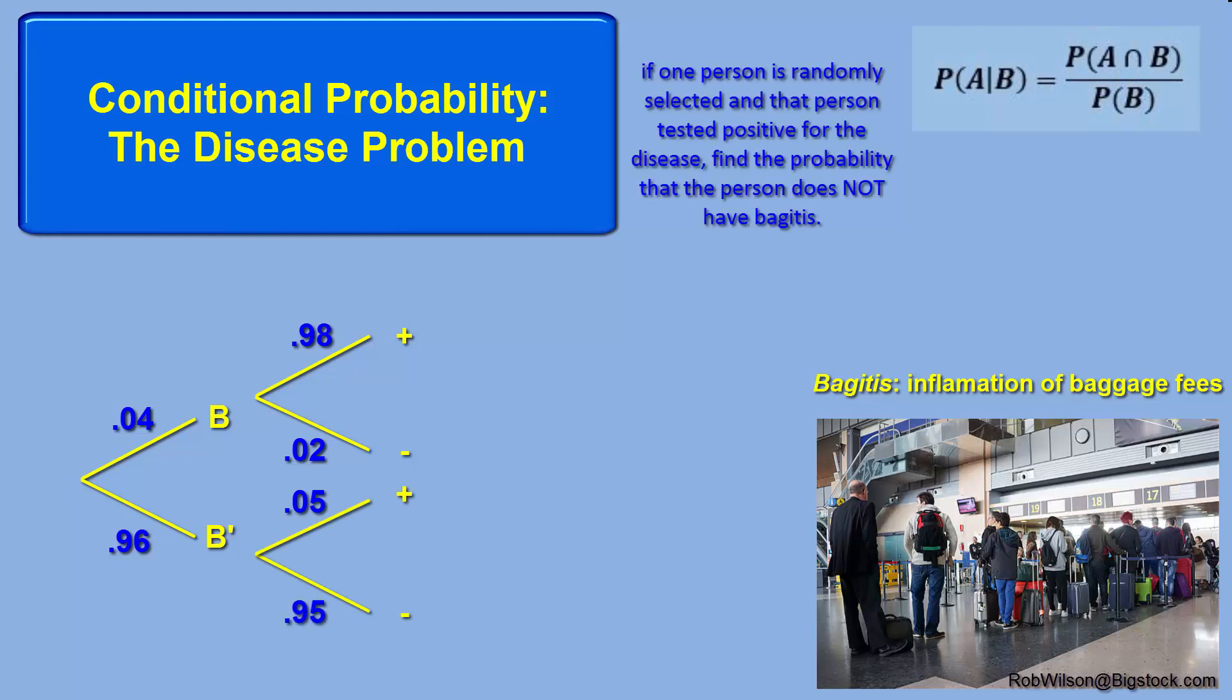So if one person is randomly selected and that person tested positive for the disease, find the probability that the person does not have bagitis. One should recognize that testing positive is not independent of having the disease. If they were independent, there would be no reason to run the blood test.